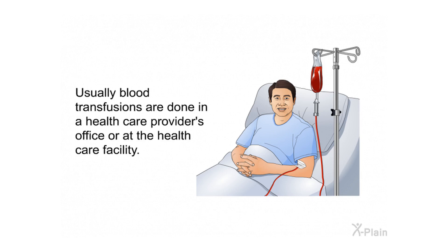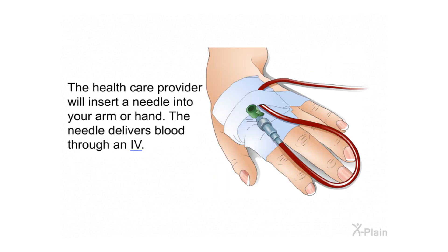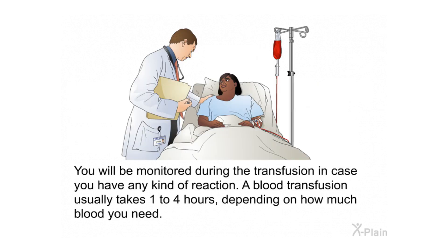Usually, blood transfusions are done in a health care provider's office or at a health care facility. The health care provider will insert a needle into your arm or hand. The needle delivers blood through an IV. You will be monitored during the transfusion in case you have any kind of reaction. A blood transfusion usually takes one to four hours, depending on how much blood you need.